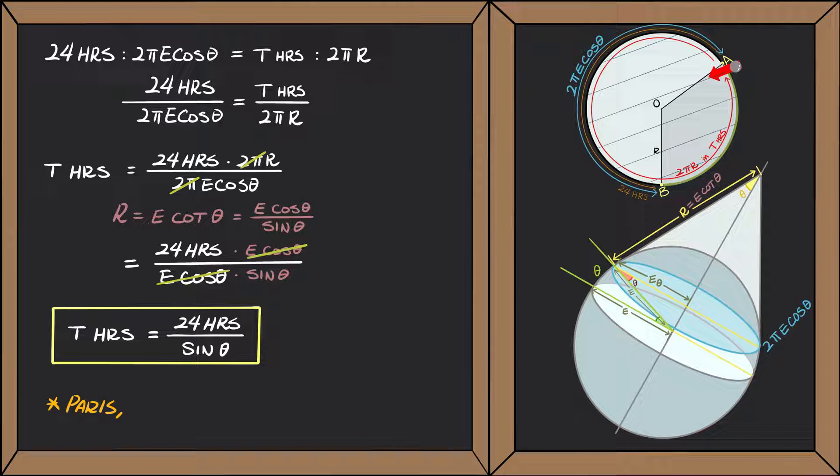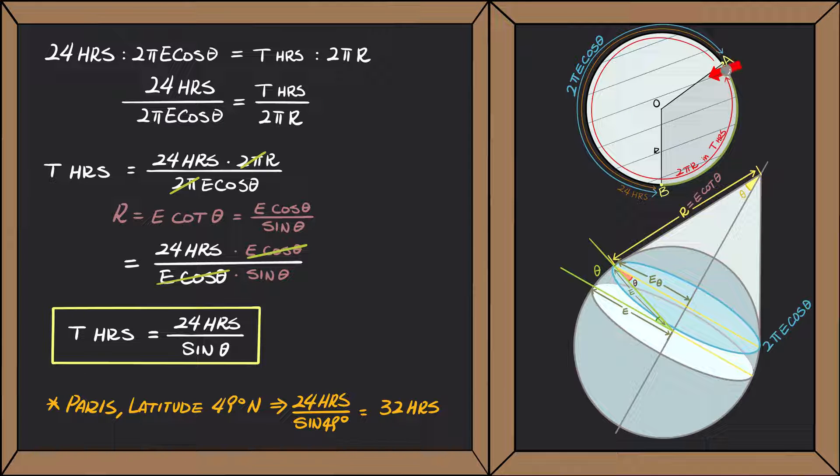For example, in Paris, France, which has a latitude of 49 degrees north, it takes 32 hours for a pendulum to make a complete turn.